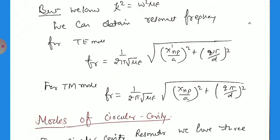These are the resonance frequencies for the TE and TM modes for the circular or cylindrical waveguide cavity resonators. Now, the number of modes for the circular cavity.